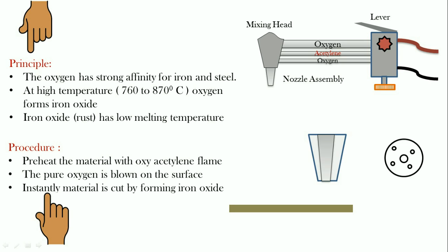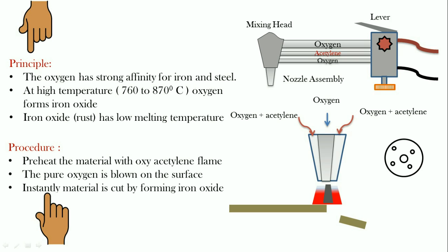Let's look at the details of the nozzle assembly. There are two nozzles which are concentric to each other. The small holes are used to supply the oxygen and acetylene for preheating purposes, whereas the central hole is used to supply the pure oxygen. When the oxygen is supplied, the material is instantly cut into two pieces by the formation of iron oxide.